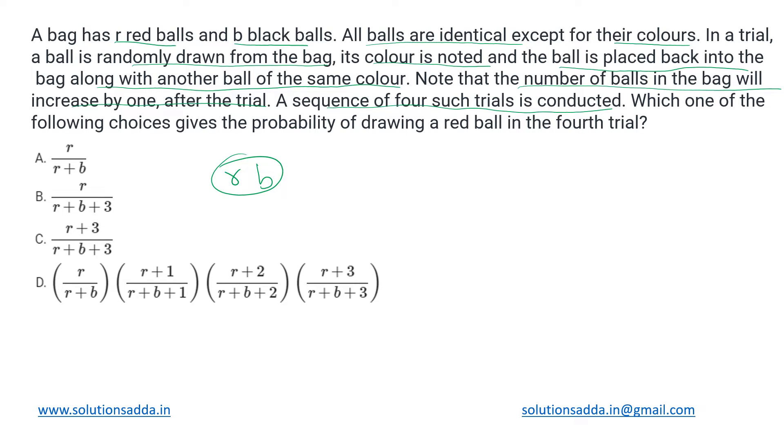A sequence of four such trials is conducted, and we have to find the probability that a red ball will be drawn in that fourth trial. We can construct a tree for this. We will start with the bag whose initial configuration is r and b. There are two cases in the first trial. If we draw a red ball, the configuration would be r plus one and b. If we draw b in the first trial, the result would be r and b plus one.